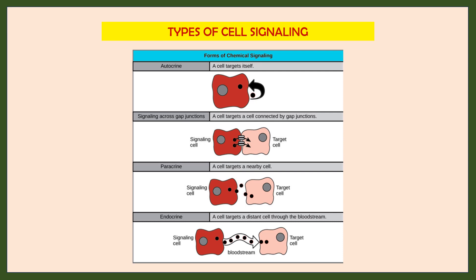Now we will discuss some types of cell signaling. We will study five types: autocrine, paracrine, endocrine, juxtacrine, and synaptic signaling.